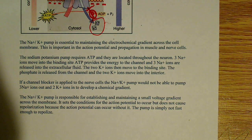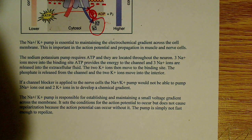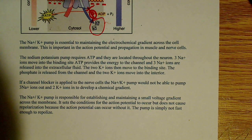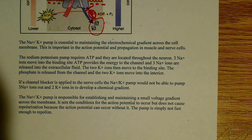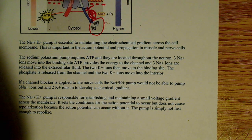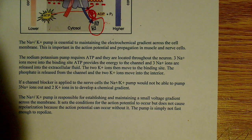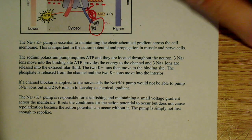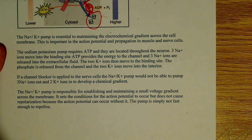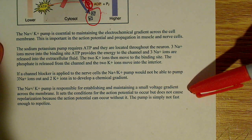And if a channel blocker is applied to a nerve cell, the Na+/K+ pump would not be able to pump the three Na+ ions and the two K+ ions out against their potential, against their chemical gradient. And this is probably the biggest misconception that people have in these courses about the sodium potassium pump.